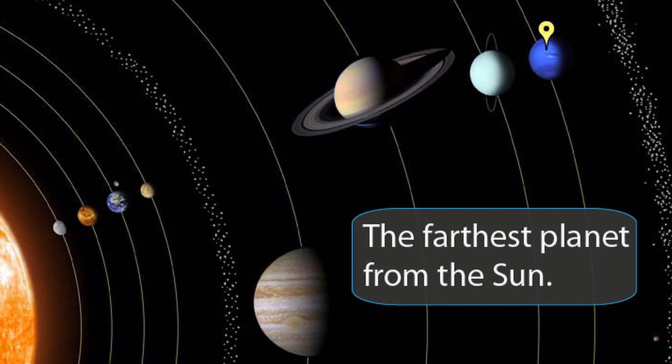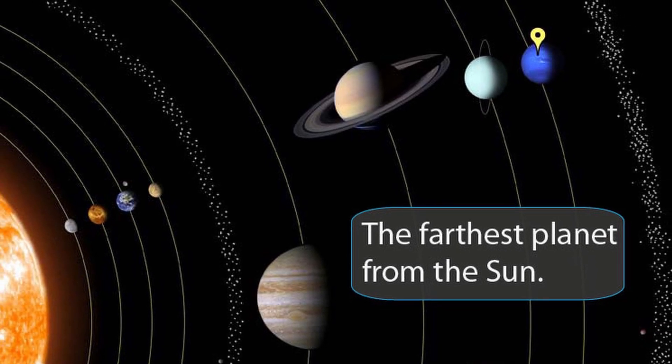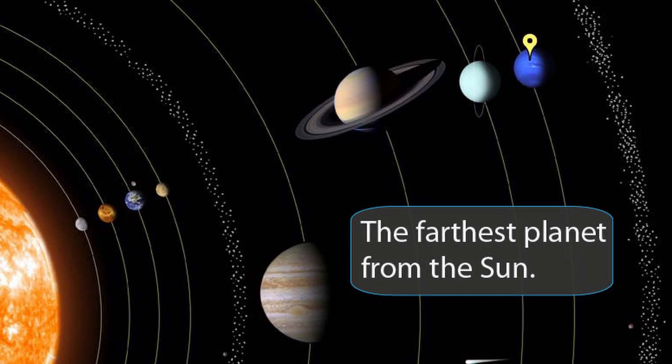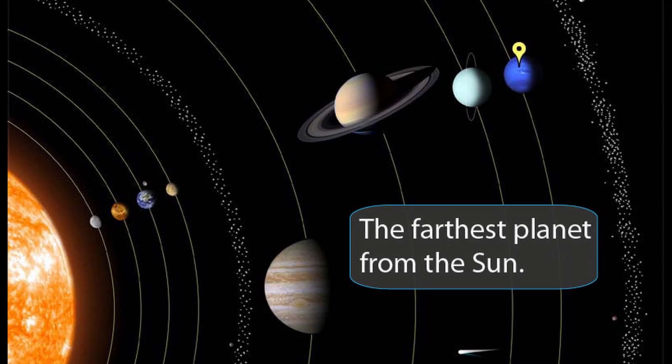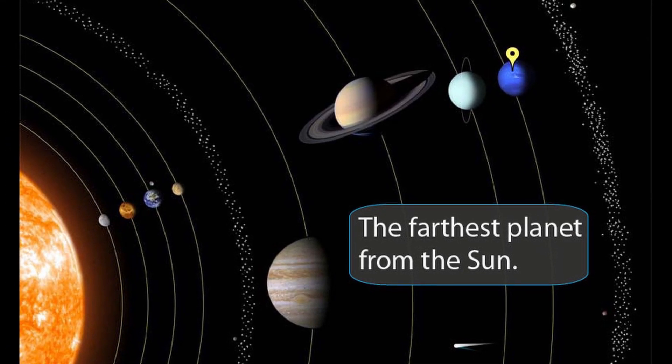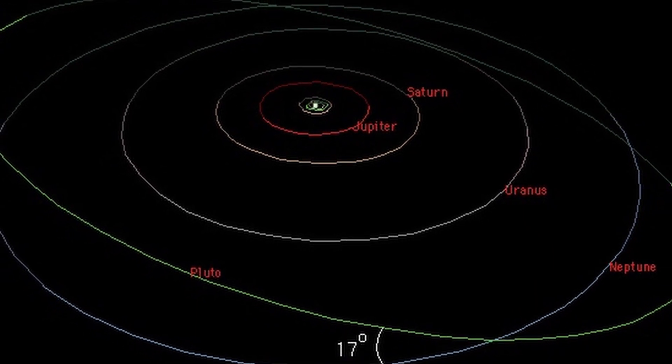Neptune orbits our Sun at a distance of around 2.8 billion miles, that's 4.5 billion kilometres. This is such an unimaginable distance.